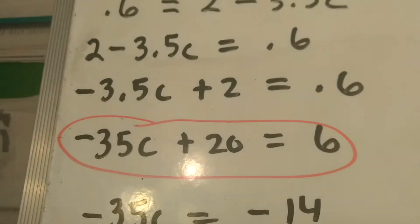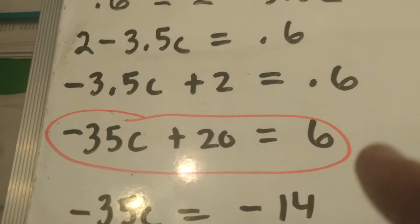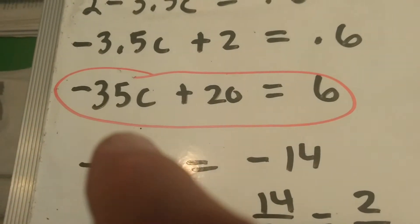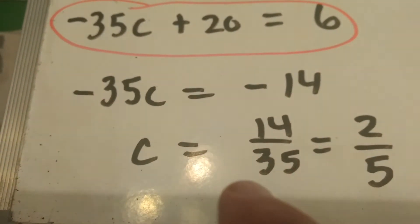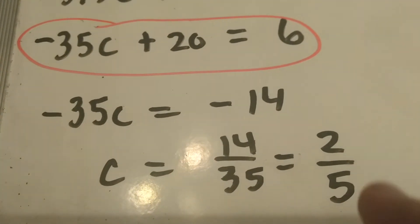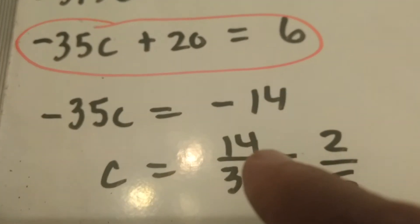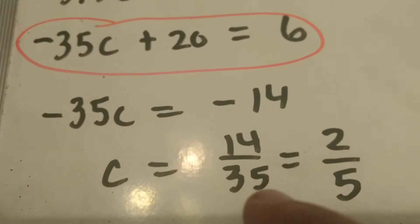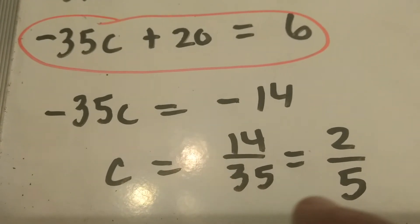So now we're in two-step form. Notice that I circled it. So we're going to subtract 20. Divide by negative 35, we get c equals 14 over 35, which reduces to two-fifths. Divide 14 by 7, you get 2. Divide 35 by 7, you get 5.